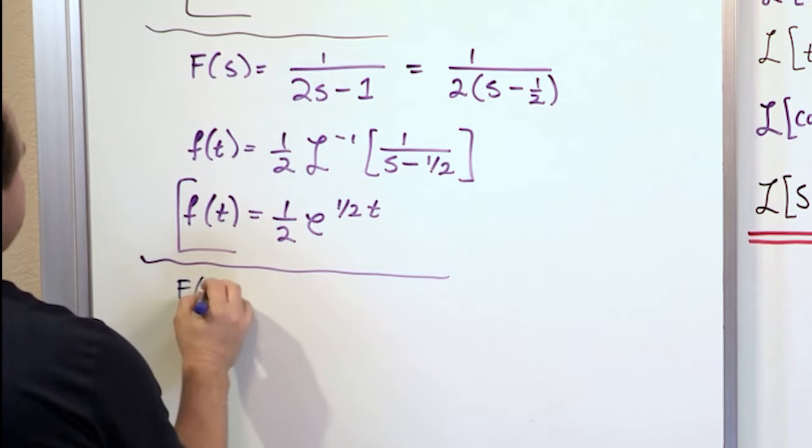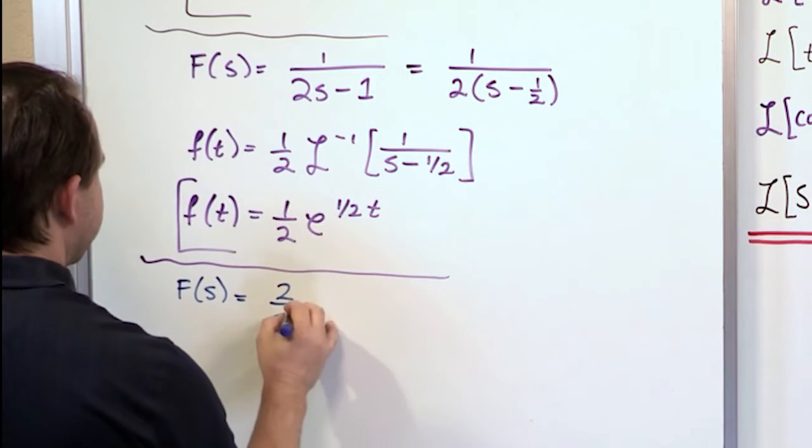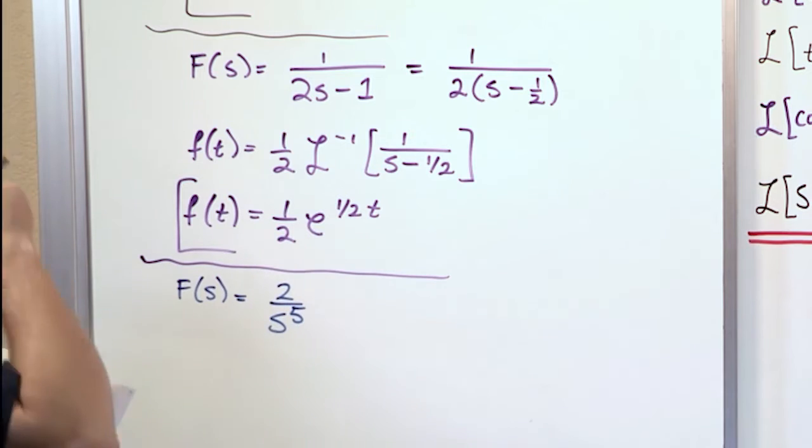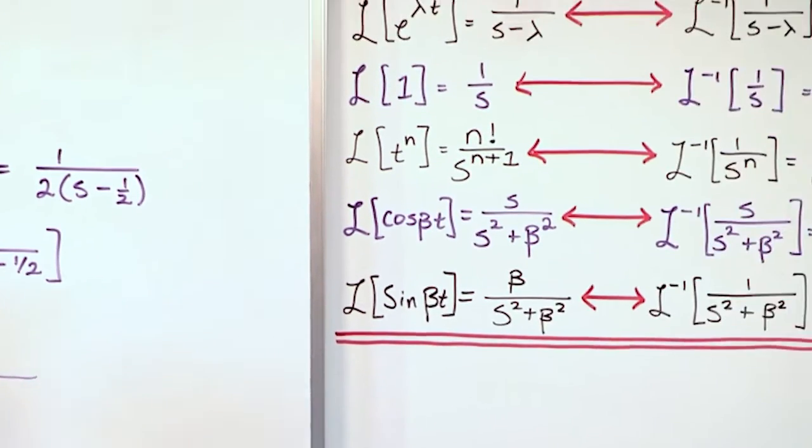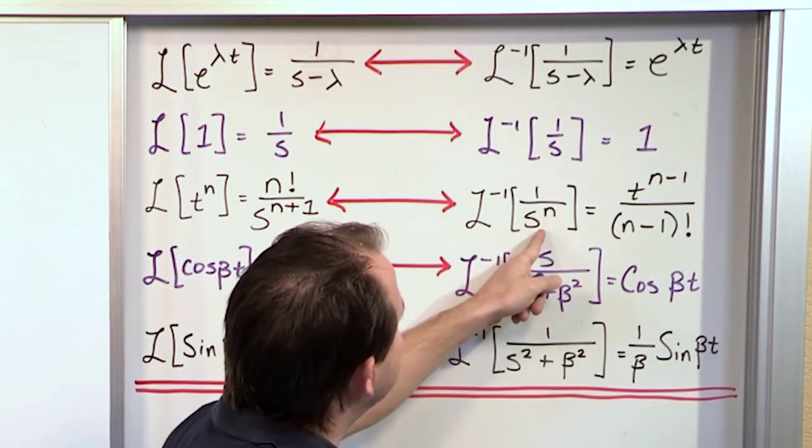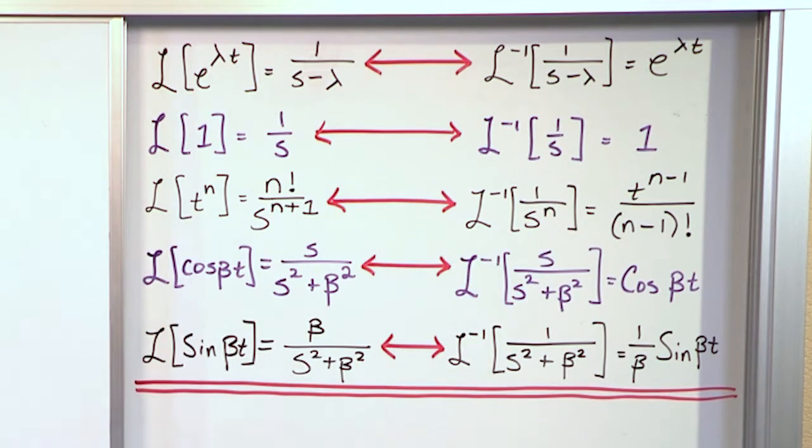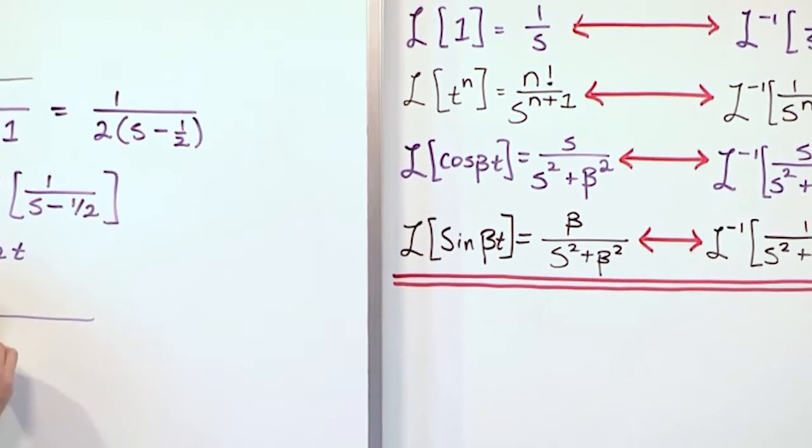So for our third one let's say we have a function of s 2 over s to the fifth power. And we want to invert that. Now we go over here and we first look and say well this doesn't quite match. This doesn't quite match. This looks like it matches. But there's a 2 on the top. That doesn't quite match. But then you realize that you can do exactly the same thing.